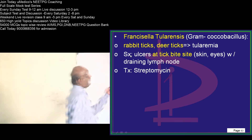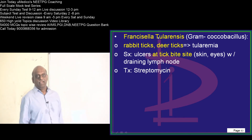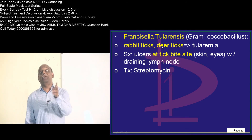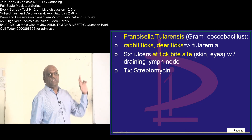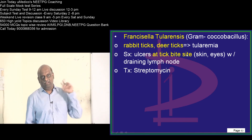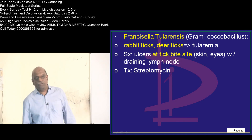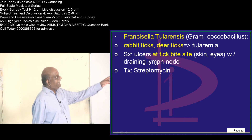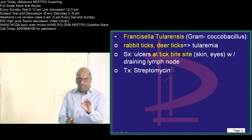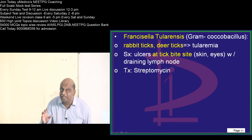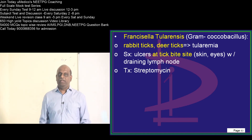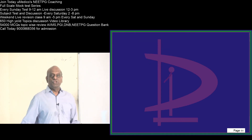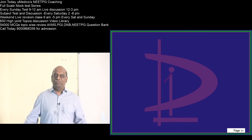Comments on Francisella tularensis. It is also a gram-negative coccobacillus — that is the speciality. Rabbit ticks, deer ticks — tularemia is the buzzword you have to remember. There will be ulceration at the tick bite site. Streptomycin is the drug of choice for tularemia — you should never forget. That is all the story of the gram-negative organisms.